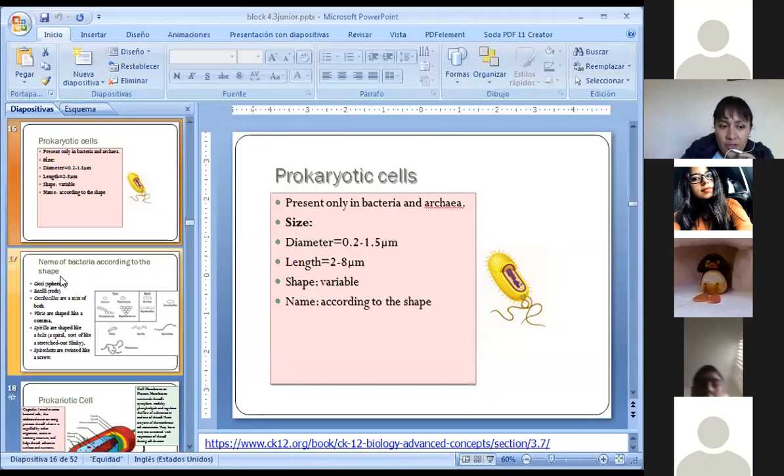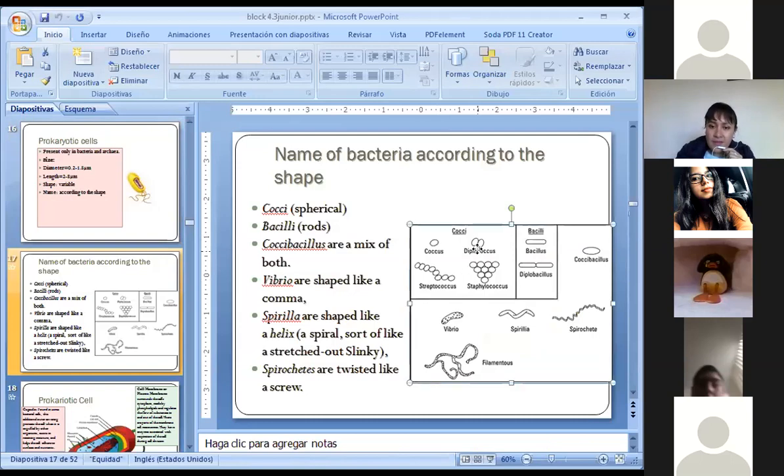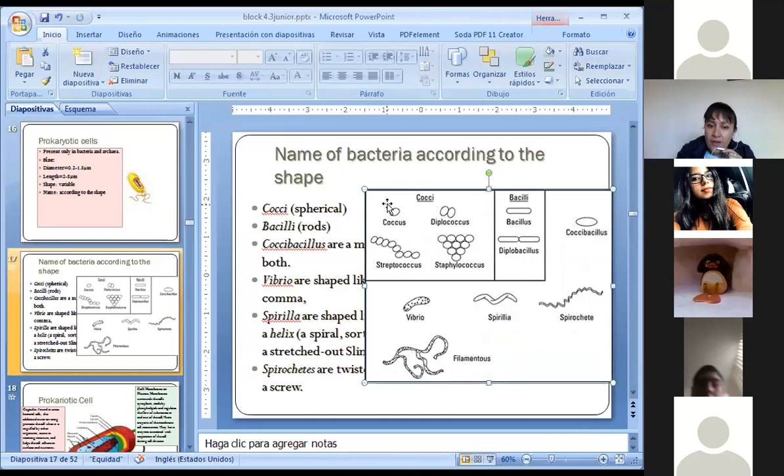So now, we're going to see here. Here are the bacteria that you already gave me the names. So Cocci will be, we can say that there are three main groups, Cocci, Bacilli, and others. In Cocci, we're going to have Coccus, Diplococcus, Streptococcus, and Staphylococcus. And, as you see, Coccus is just one spherical bacteria. Diplococcus, there are two bacteria together. Streptococcus is like a chain of bacteria, and the last one is like grapes, un racimo de uvas.